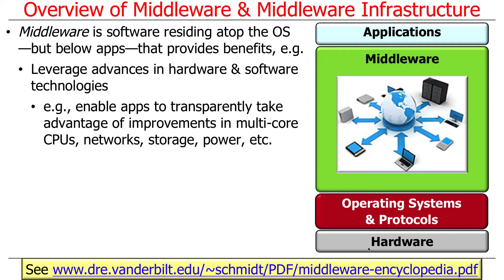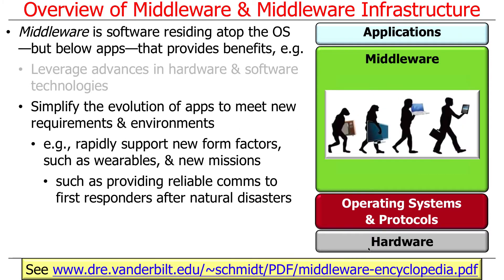Middleware allows apps built to it to take advantage of improvements in multi-core CPUs, networking, storage, and power, which are often exposed by the operating system through different non-standard or non-consistent APIs. Were you to program your app directly to the operating system, you'd get locked in, and when innovations come along, it would be hard to retrofit them transparently. Middleware also makes it easier to evolve apps to handle new requirements and new environments — for example, new form factors like wearables, or new missions like providing reliable communication to first responders after natural disasters where fixed network infrastructure has been knocked out, requiring mobile ad hoc networks.